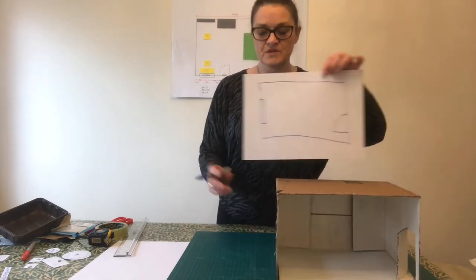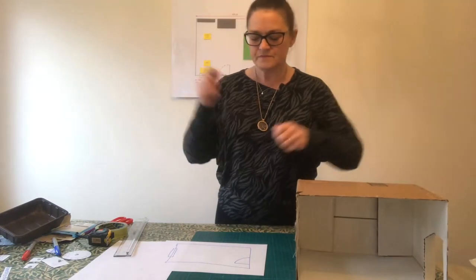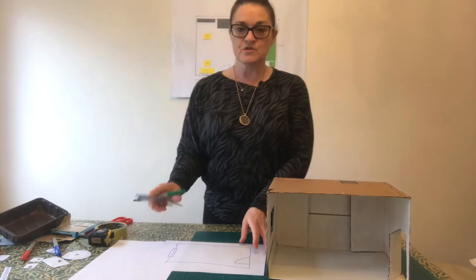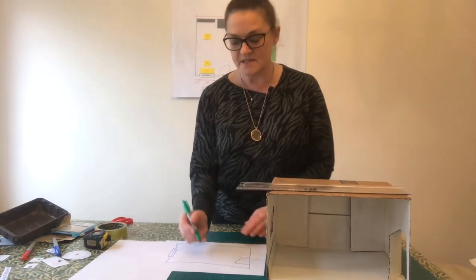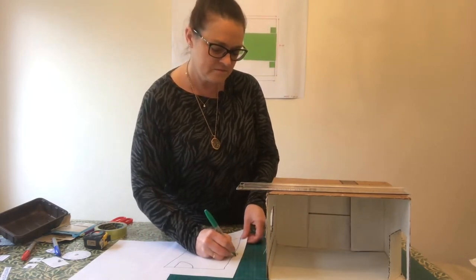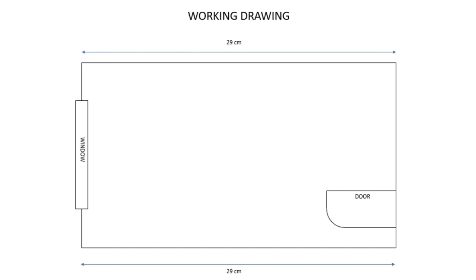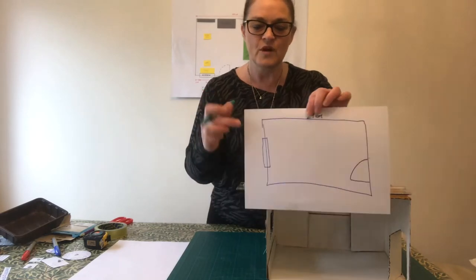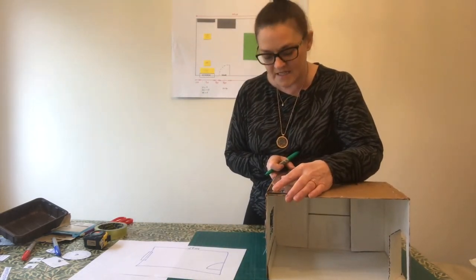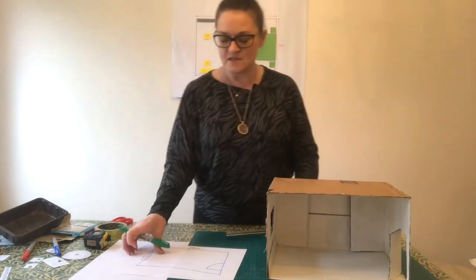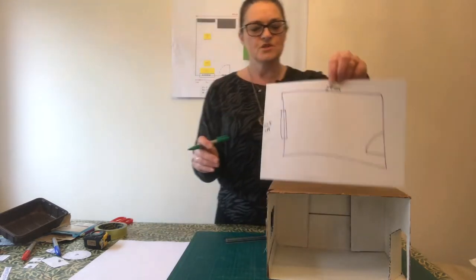Now we're going to start taking some measurements — I'll do those in a different colour so it's easier to see. We need the length first. You can use your ruler or tape measure, whichever is easiest. That's 29 centimetres, so from that side to that side. Now we need to know from the front to the back — that is 22 and a half centimetres.